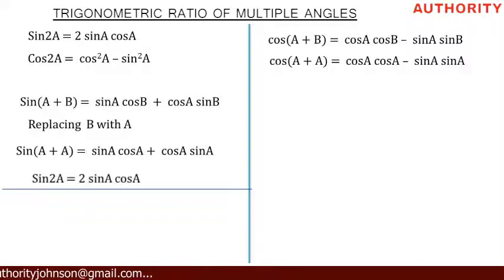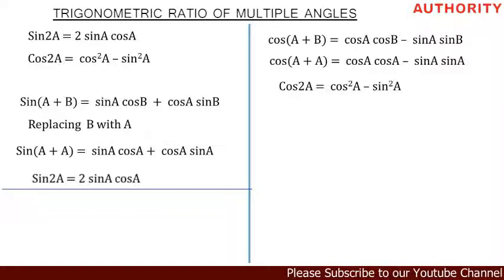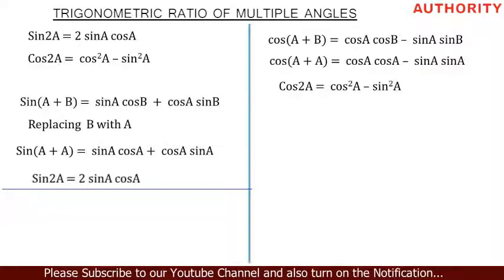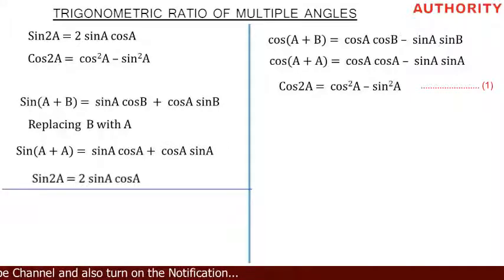Replacing B with A gives us cos (A + A) is equal to cos A cos A minus sin A sin A. Now A + A is 2A, so we have cos 2A is equal to cos A times cos A minus sin A times sin A, which gives cos squared A minus sin squared A. Let's call this equation one.